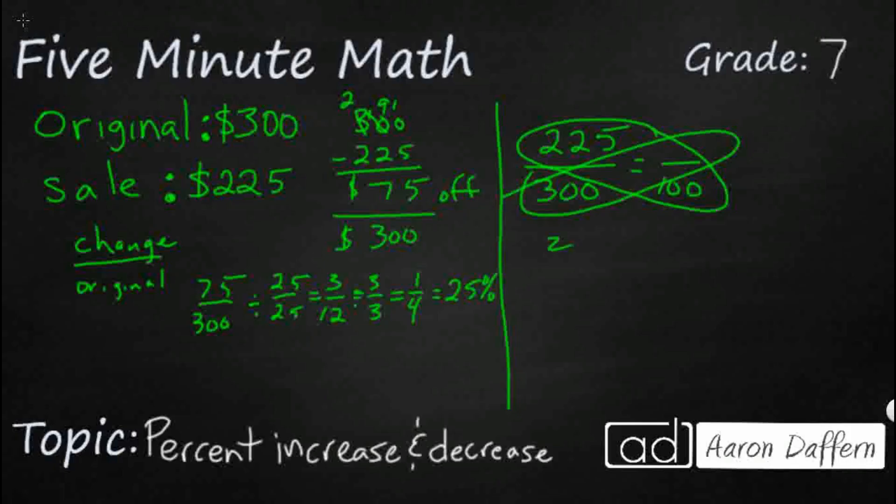So 225 times 100, that's going to be pretty easy. I'll just add the two zeros there. And that's going to equal 300, we'll call it X. 300X, which means we simply divide both sides by 300.